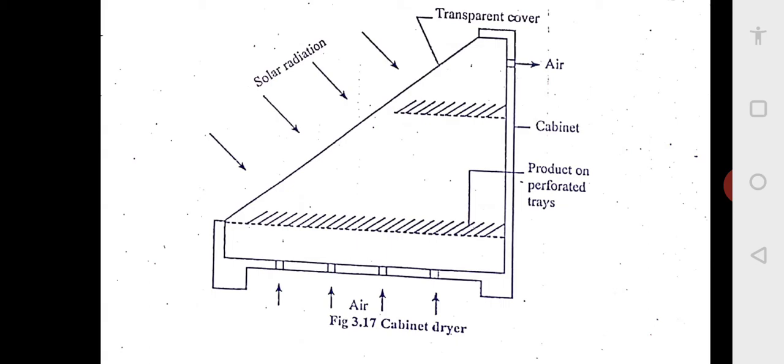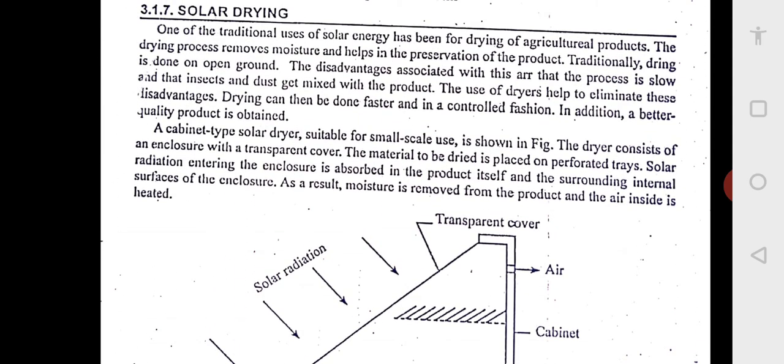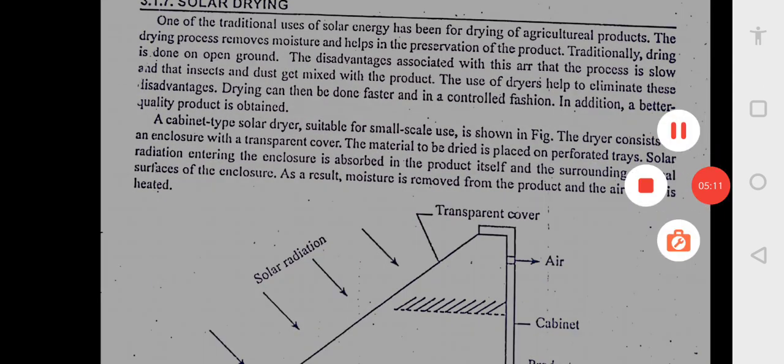It is a very simple device with an inclined transparent cover and vents in the bottom for air to enter and vents at the top for air to escape. It is made of a cabinet and some perforated trays, on which we can keep the agriculture produce. This is known as solar drying.